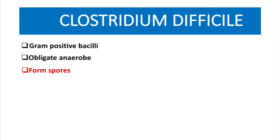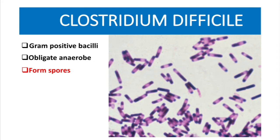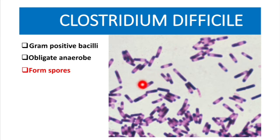All Clostridium species form spores. On the microscope they look like this — here you have your Clostridium and you can see the spore, which appears as a lighter area. Sometimes it is in the center, sometimes it is at the end of the rod; it just depends.